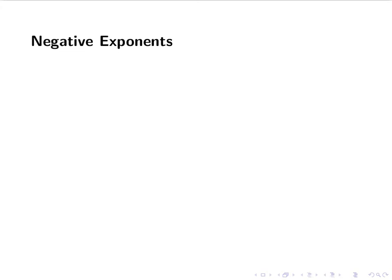Hello everyone, today we're going to look at negative exponents. By definition, x to the negative n is going to be 1 over x to the n, and therefore 1 over x to the negative n equals x to the n. So if I have a negative exponent, I can take the reciprocal and make the exponent positive.